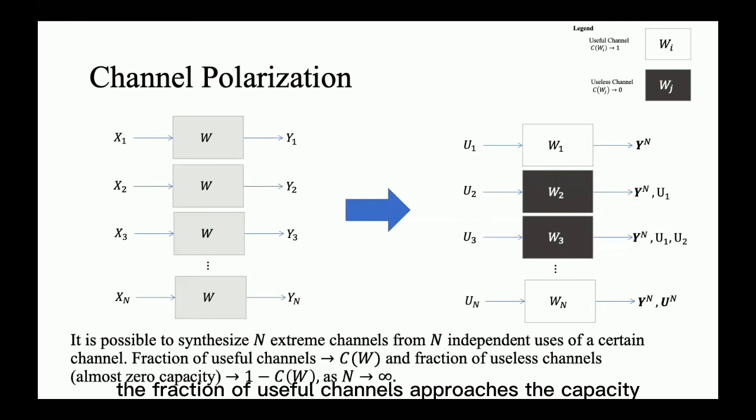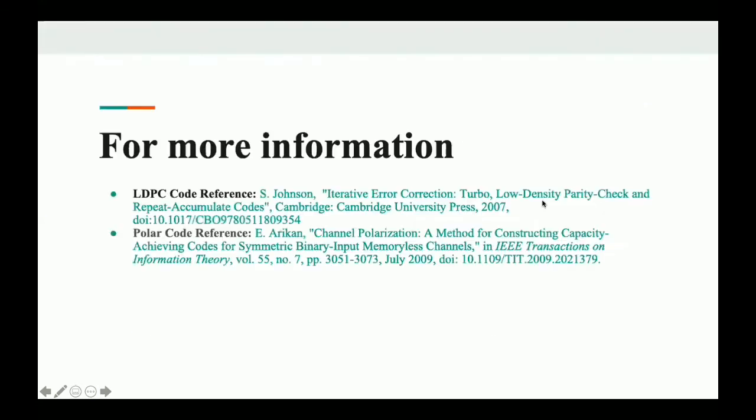The fraction of useful channels approaches the capacity of the BI-DMC W, and thus the term capacity achieving. So, how to structure these new polarized channels? To know more, please refer to the reference. Thank you.